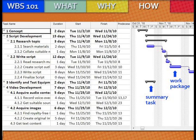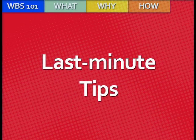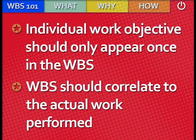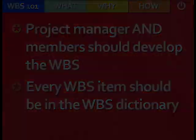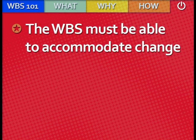Now that you've learned how to create a WBS using Microsoft Project, why don't you try it on your own? Before getting started, here are some last-minute tips. Each individual work objective should appear only once throughout a WBS. All major categories should be the sum of all the tasks in its sub-levels. The WBS should correlate to the actual work which needs to be performed. Project team members, as well as the project manager, should be heavily involved in the development of the WBS. The WBS dictionary should accompany every item to ensure efficient understanding of the tasks. Finally, the WBS must be able to accommodate changes that often occur during any project.